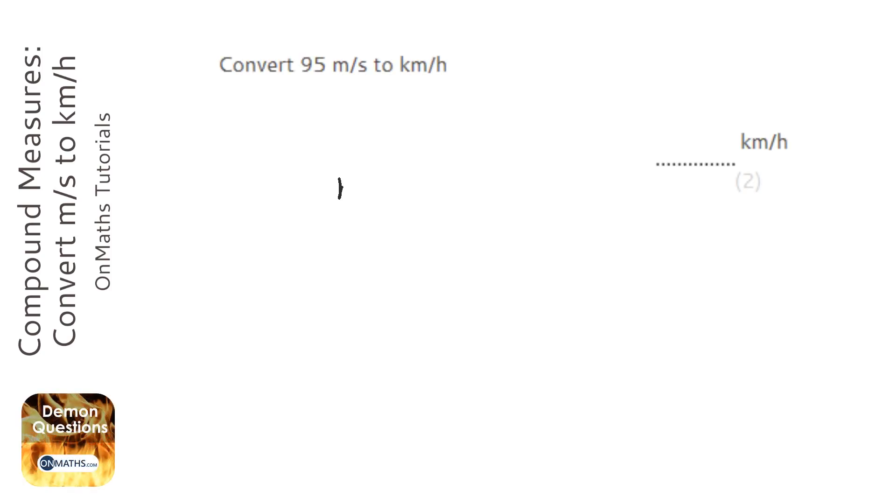Okay, so this question seems quite simple but it's not as simple as it looks. We've got meters per second and we've got kilometers per hour. Now to get from meters to kilometers we divide by a thousand. That's nice and easy. If we had a thousand meters that would be one kilometer.